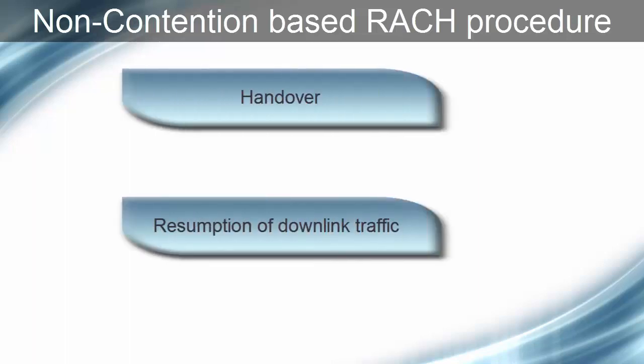Contention-Free Random Access Procedure: There are instances when, because of timing restrictions, contentions are not acceptable. Examples of such instances are handover and resumption of downlink traffic. In such cases, dedicated preamble sequences are allocated to UE by eNodeB. As sequences are allocated by eNodeB, there are no collisions and no contentions. Hence, the contention-free procedure is much faster.